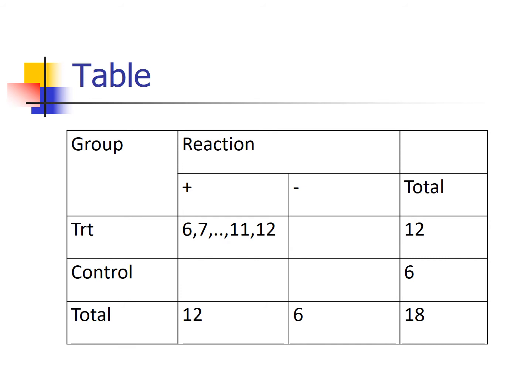If I have 6 in the upper left, I'll have 6 in the upper right, 6 in the lower left, and 0 in the lower right. Try putting a 7 in the upper left and filling in the rest — good practice. Verify for yourself that you can plug in 6, 7, all the way to 12 and fill in the table correctly. But if you put in a 5, it gives a broken table. So we have to be careful about what values N11 can actually take.